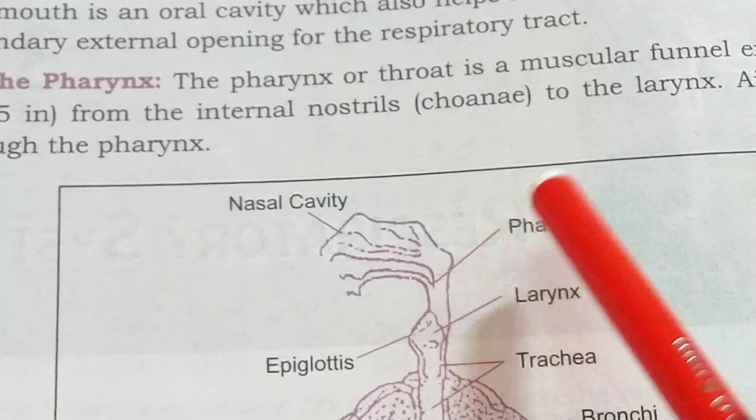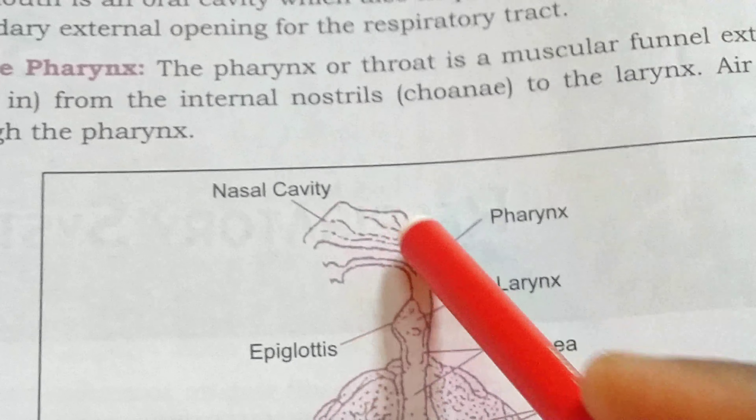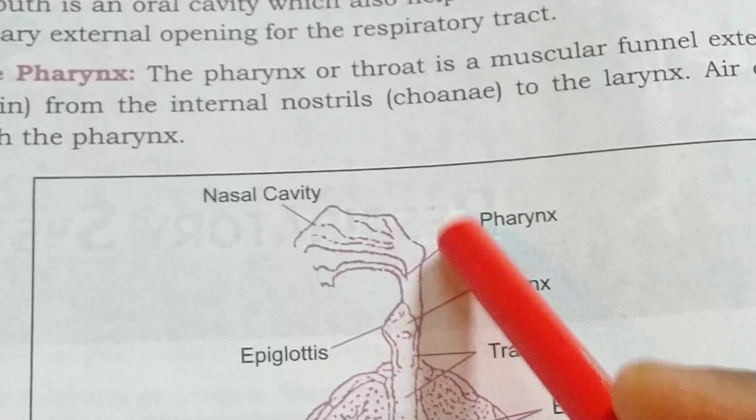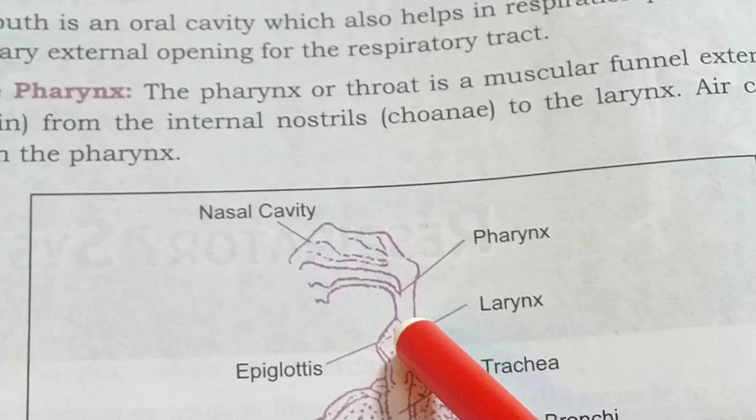After air intake through the nasal cavity, the funnel-like tubular muscular part between the nasal cavity and the larynx is known as the pharynx.